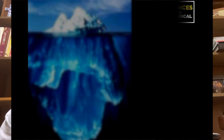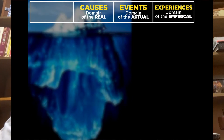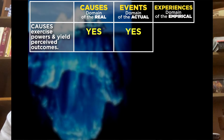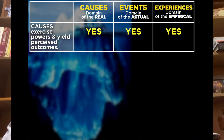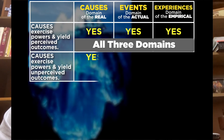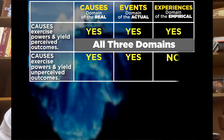Let us further unpack the depth stratification of the world. What do we mean when we say the world has three domains — the domains of experiences, events, and causes? There are four possible scenarios. In the first scenario, a cause exercises its powers and yields outcomes that are actually perceived. In such a case we cover all three domains: causes exist whether they exercise their powers or not, but here there is an outcome — an event in the domain of the actual — and the outcome is perceived, so we also cover the domain of the empirical.